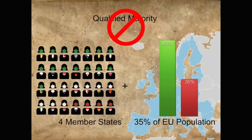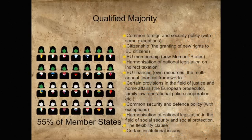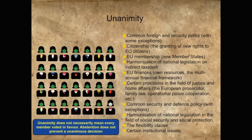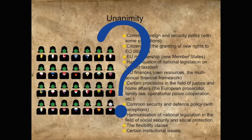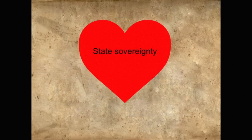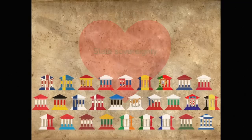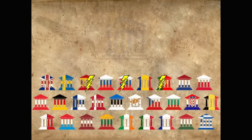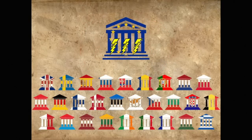And we have another exception. When making decisions on certain subjects, qualified majority is not enough — instead, unanimity is needed. Because these are subjects that lie at the heart of state sovereignty, and Member States prefer to keep these matters on an intergovernmental level, rather than handing these powers over to the EU.